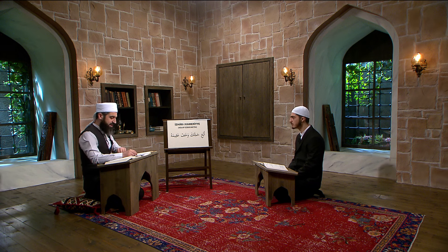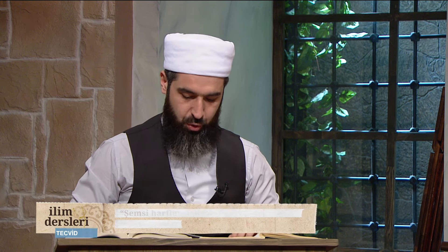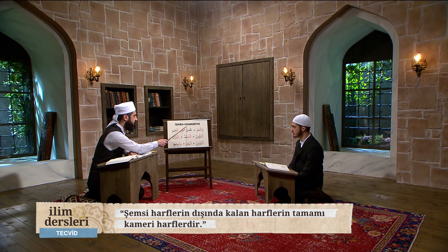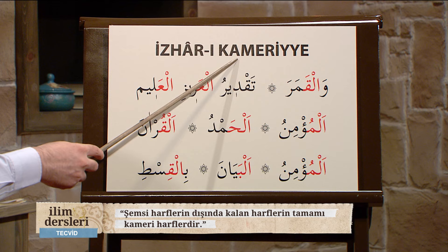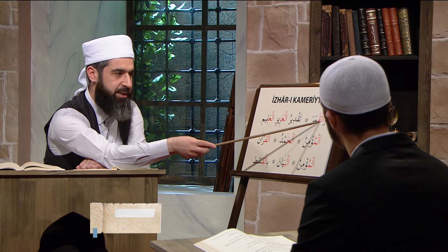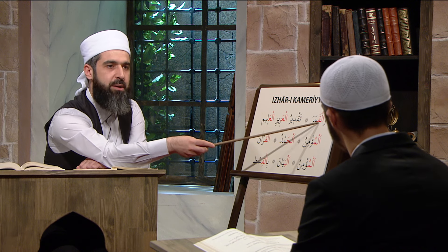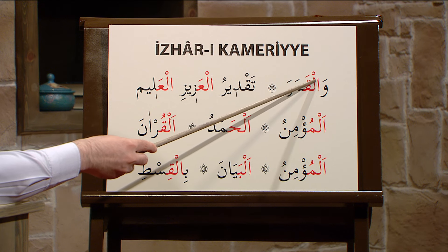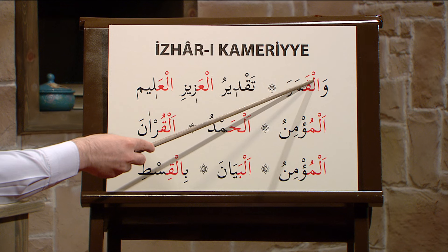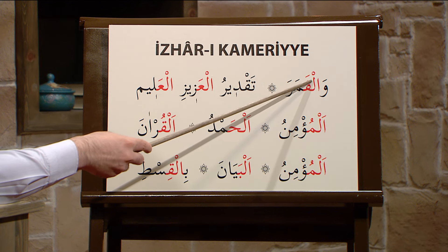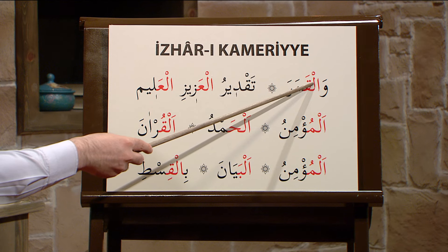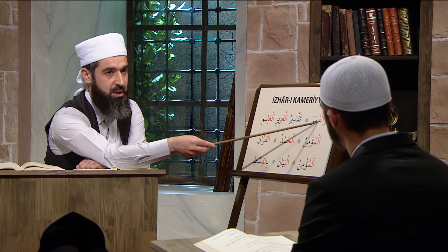Diğer bir ifadeyle Kur'an alfabesinde Şemsi harflerin dışında kalan diğer bütün harfler Kameriyye harflerdir. Şimdi örnek kelimelerimize bakalım. Örneğin 'Vel-Gamera.' Burada Elif-Lam takısını görüyoruz, ondan önce bir Vav harfi var. Elif-Lam takısını açıktan okuduk, yani idgâm etmedik. Çünkü Elif-Lam takısından sonra gelen harf Kameriyye bir harftir. Dolayısıyla burada Elif-Lam takısını açık bir şekilde ifade ederek okuyoruz: Vel-Gamera. Vak-Kamera diye bir idgâm söz konusu değil.